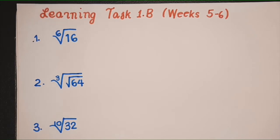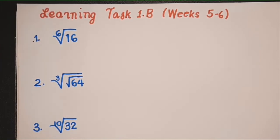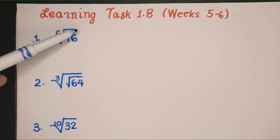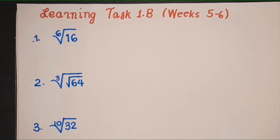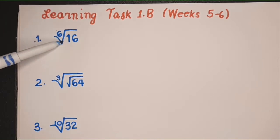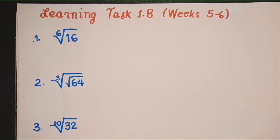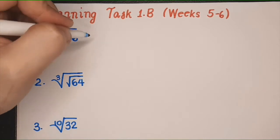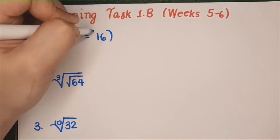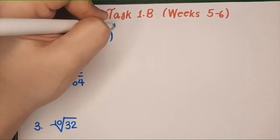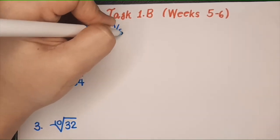We try to reduce the given index here. We try to simplify this radical expression using the smallest possible index. My suggestion is you try to write this into rational exponent form. So it's like this: 16 raised to 1 over 6.